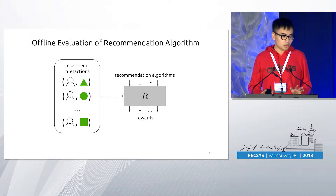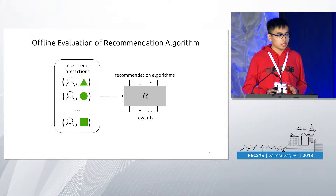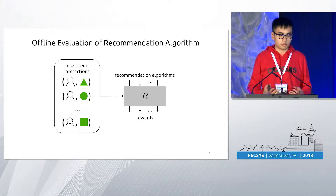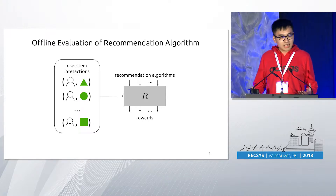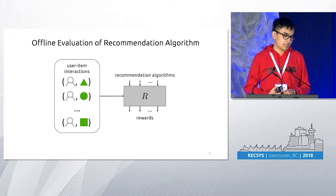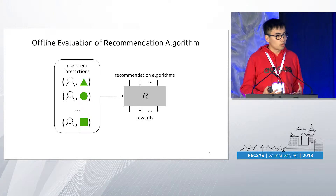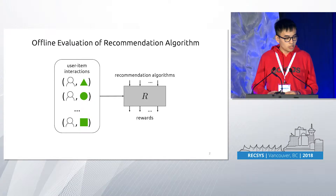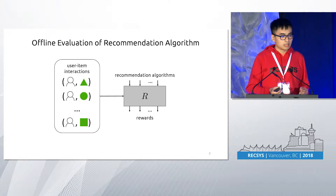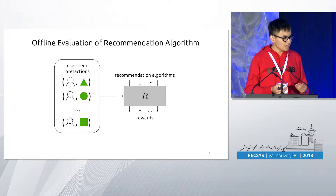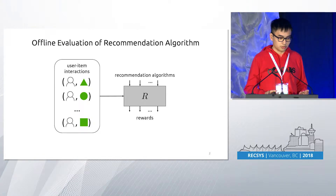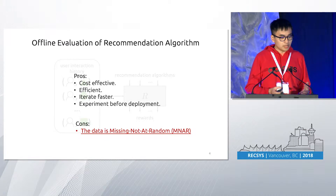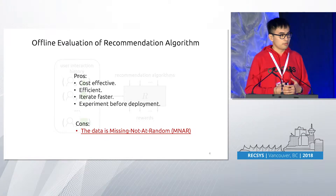As you all know, offline evaluation is a common practice for recommendation research and practical use. The basic idea is that we want to measure the reward of different recommendation algorithms using the user-item interaction history collected from an online production platform. And compared to A-B testing, there are many advantages of this approach.